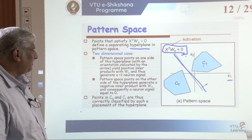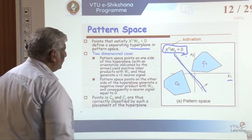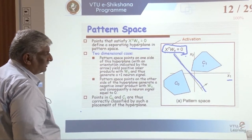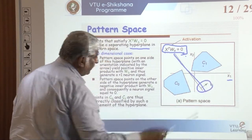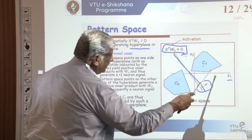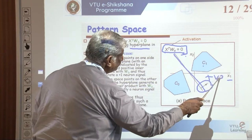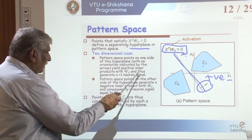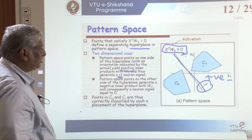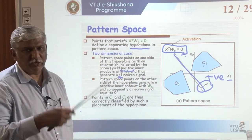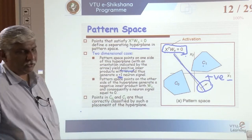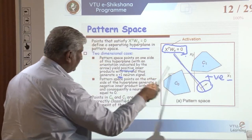The pattern space points on one side of this hyperplane, with an orientation indicated by the arrow, yield positive inner products. Wherever the arrow is marked, that region gives a positive response. With W, this generates a plus-one neuron signal, so the output is positive. Pattern space points on the other side of the hyperplane — that is the C0 category — generate a negative inner product with W.